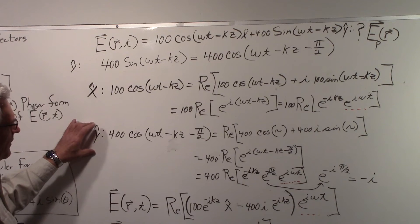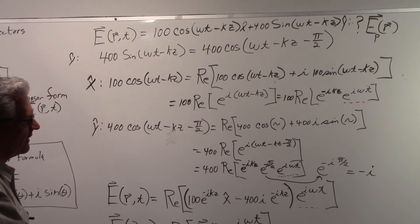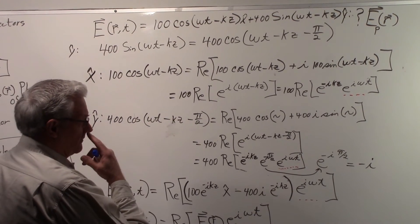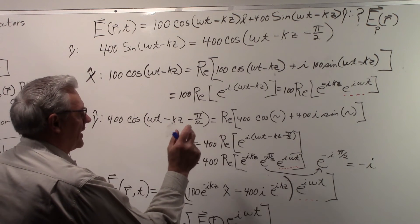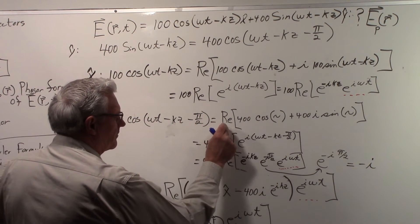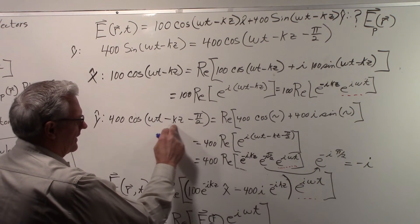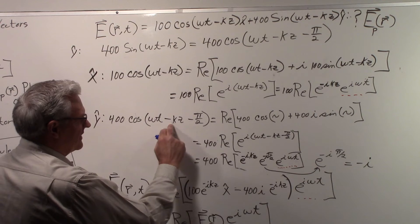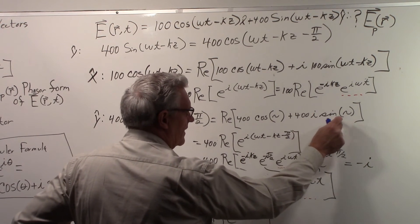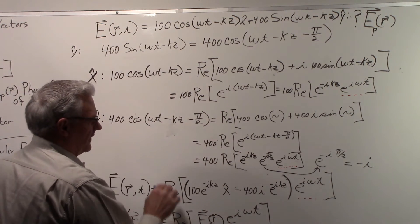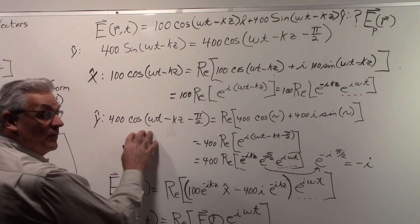We're partway there now. Now, the y component, remember we wrote it as a cosine. So we can do the same thing we did with the x component. So with the y component now, we can write that as the real part of 400 times the cosine. And I put a little squiggly in here to indicate it's the omega t minus kz minus pi over 2. Then we can add the 400i sine of this quantity. And again, you can see if you take the real part of that, you get what you started with.